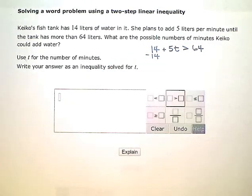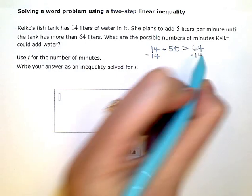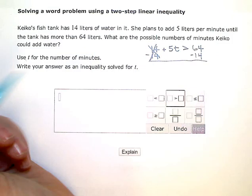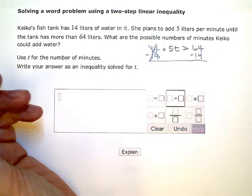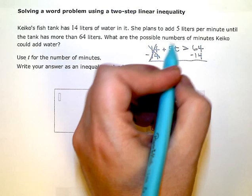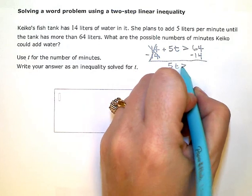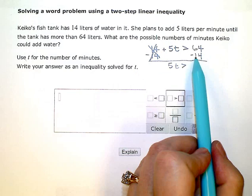So the first thing I'm going to do is subtract this 14, and then just to keep things balanced, I have to do the same thing to the other side. So this is the first step here to zero out or get rid of the 14, and I'm left with 5T is greater than 64 minus 14, which is 50.